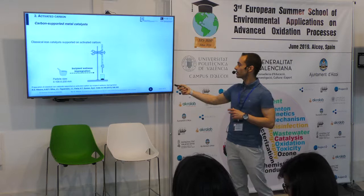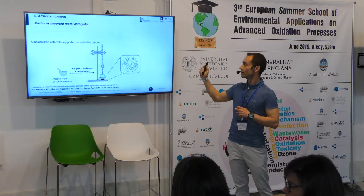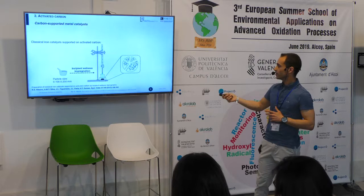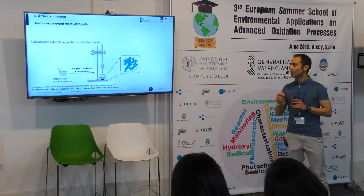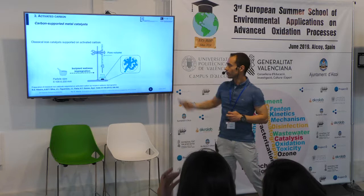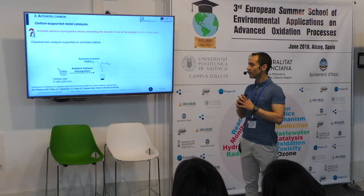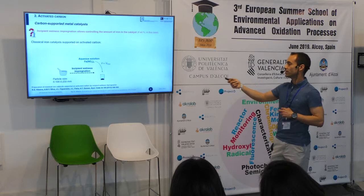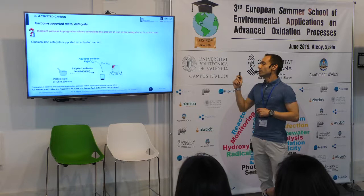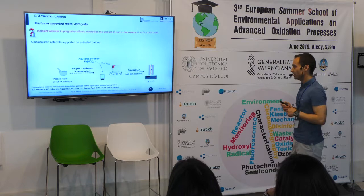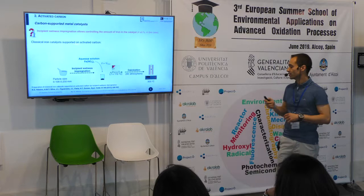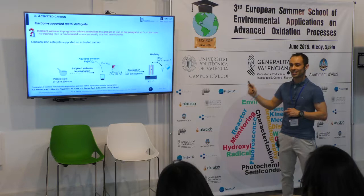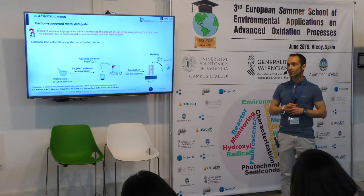To perform incipient wetness impregnation, you should first add water drop-wise to a known amount of activated carbon. Once you see that an extra drop of water is no longer adsorbed, you stop adding water — that is the pore volume. Afterwards, you prepare an accurate solution with that same volume using the metal precursor, in this case iron, and add it to a fresh sample of the carbon, which is then dried and calcined to promote the growth and attachment of the metal crystals. The final washing step is required to remove not-so-well-attached metal species.